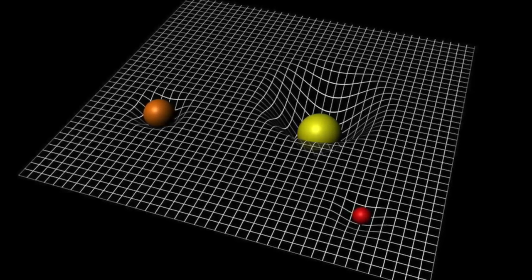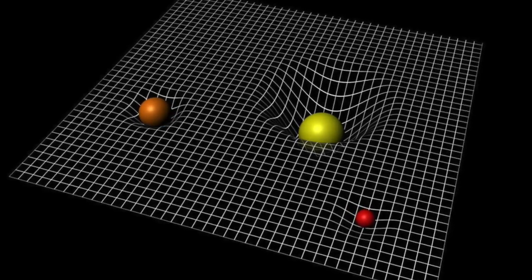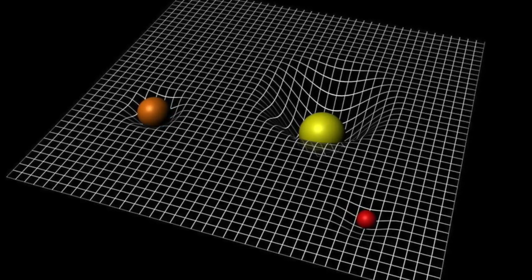As the American physicist John Wheeler put it, space tells matter how to move, matter tells space how to curve.